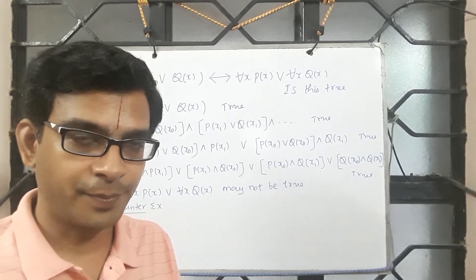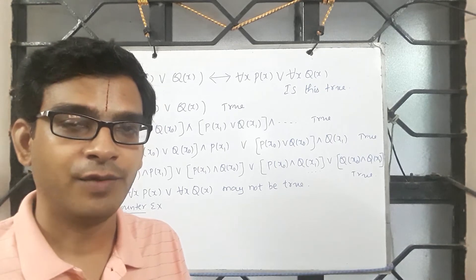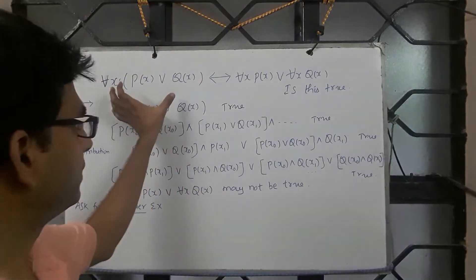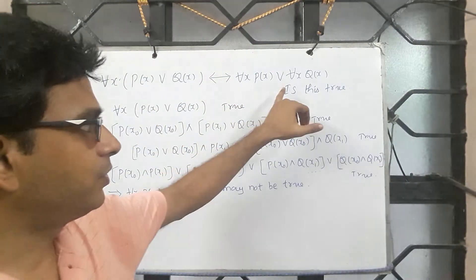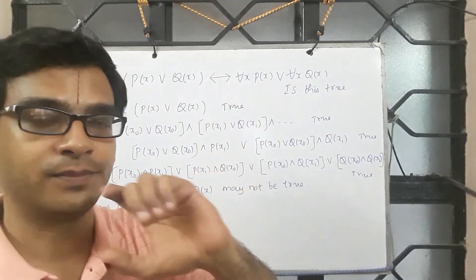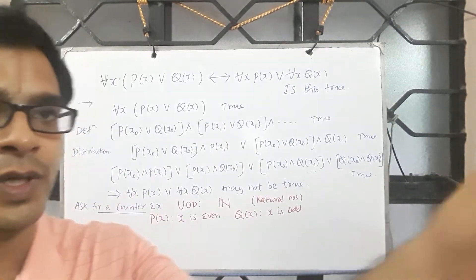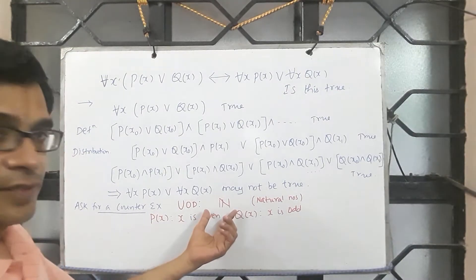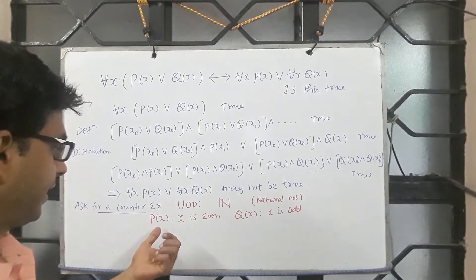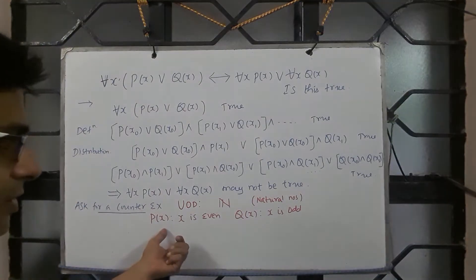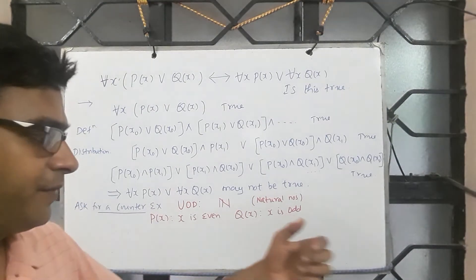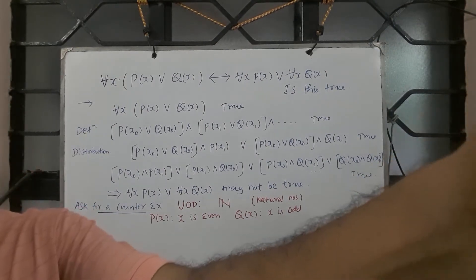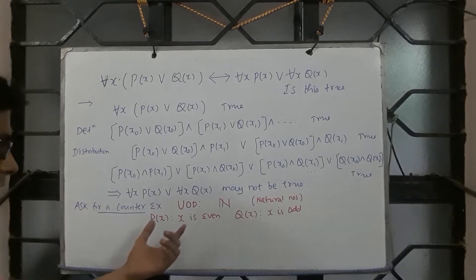Second, a well-defined predicate for P. Third, a well-defined predicate for Q such that it satisfies the premise but fails to satisfy the conclusion. Look at this UOD. UOD is set of natural numbers. I define a predicate P which says x is an even number. I define a predicate Q which says x is an odd number.